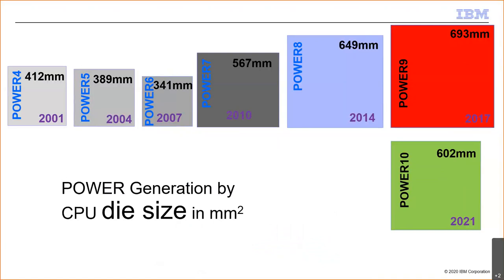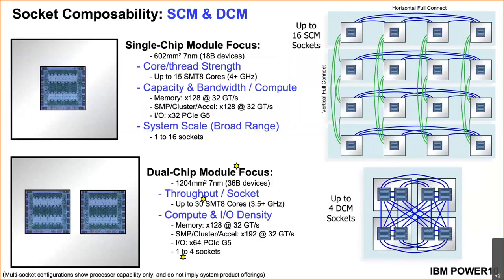Over the generations, the lithography goes down but the chip size tends to go up. Power 6 was a slightly unusual design that got to 5 GHz but used a technique that couldn't be maintained going forward. The Power 9 chip is bigger than the Power 10 chip, but we shrank the transistors and then added more transistors, so it went down a bit then came back up. We're looking forward to having chip samples to hand around at conferences.